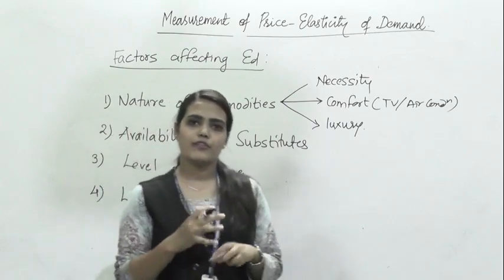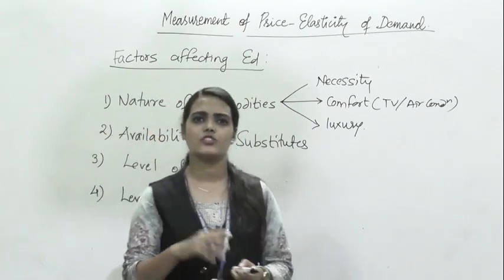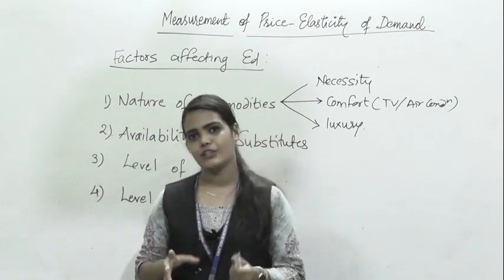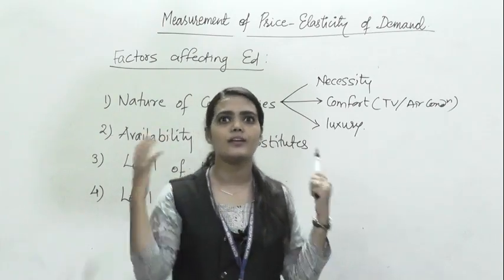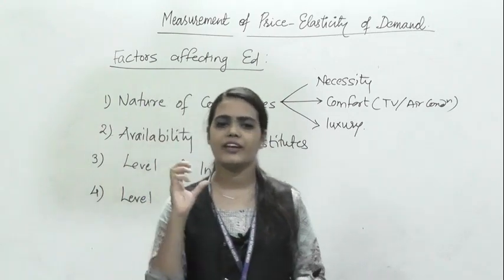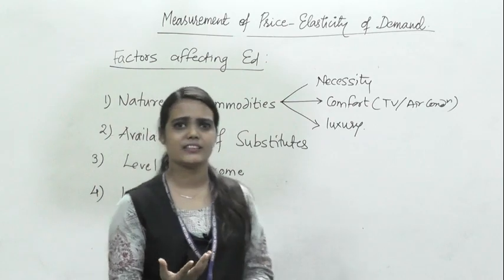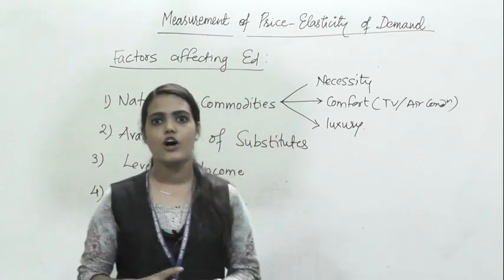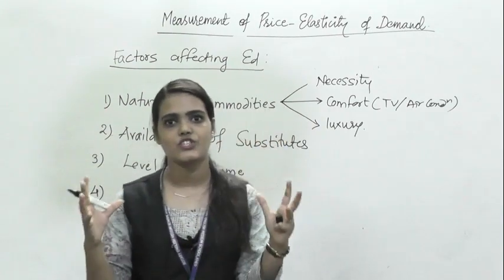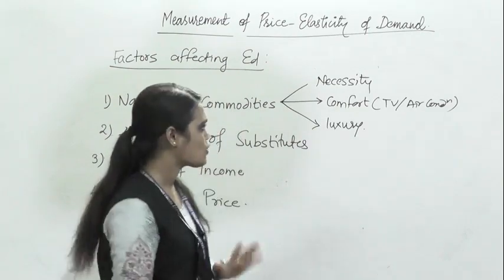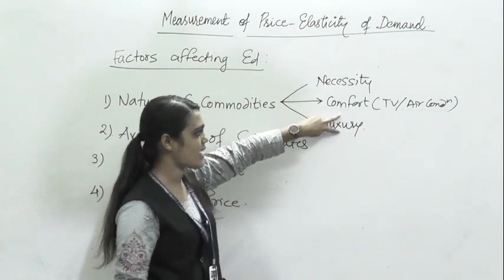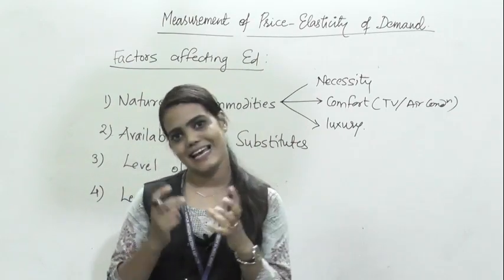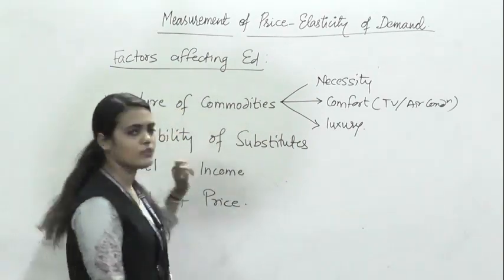Comforts are generally durable products like TVs and air conditioners. The elasticity for comforts is relatively less than for luxuries. Whether something is a comfort or luxury is relative — for a poor person, a TV may be a luxury, but for someone with a reasonable income, it is just a comfort. Basically, necessities have inelastic demand while comforts and luxuries have elastic demand, though their levels of elasticity may vary.